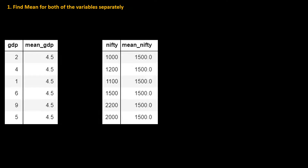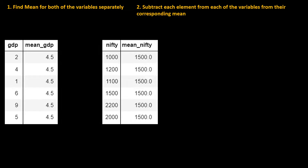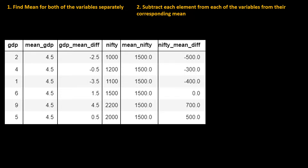How to find the mean is explained in my first video — the playlist link is in the description. Once you have the mean, the next step is to subtract each element of each variable from its corresponding mean. So for each element in GDP and in Nifty, find the difference between the element and the mean of that variable.